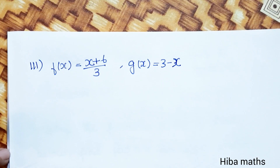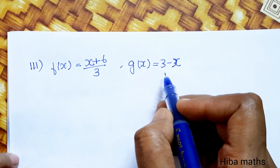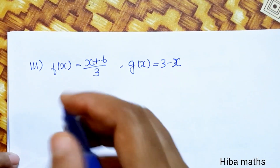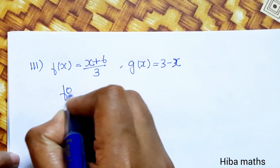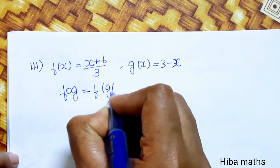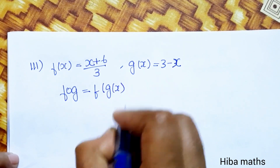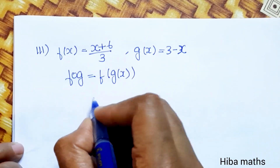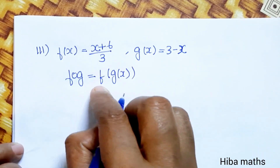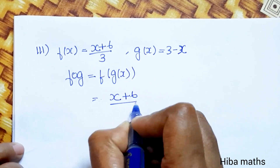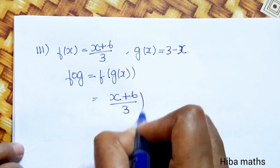Third question: f of x is equal to x plus 6 by 3, g of x is equal to 3 minus x. So f of g is equal to f inside g of x. The f function is x plus 6 by 3.